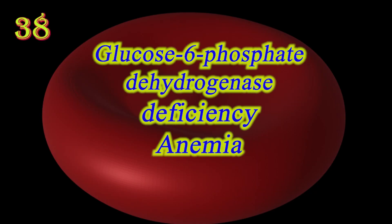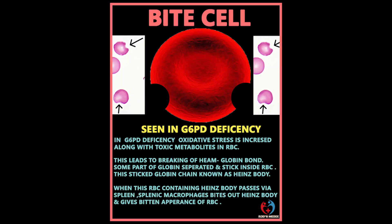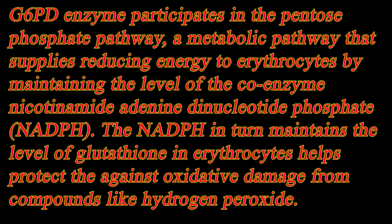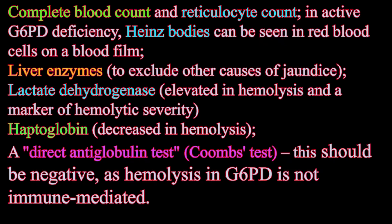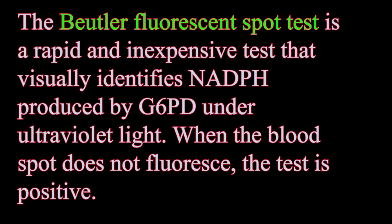G6PD deficiency anemia: glucose-6-phosphate dehydrogenase is an enzyme found in the cytoplasm of all cells that prevents damage from reactive oxygen species. Inherited deficiencies of G6PD can result in acute hemolytic anemia during times of increased reactive oxygen species, which may be caused by stress, certain foods containing high amounts of oxidant substances, and some medications.